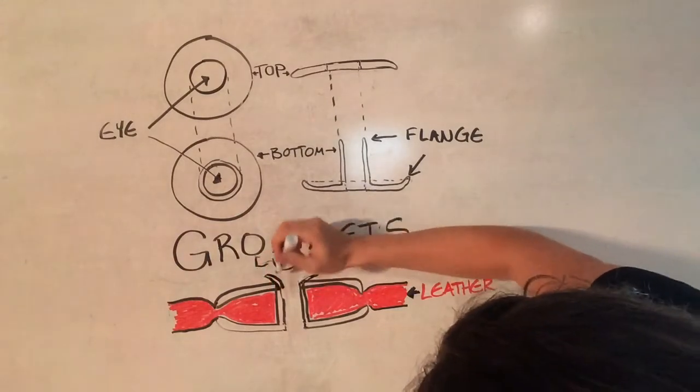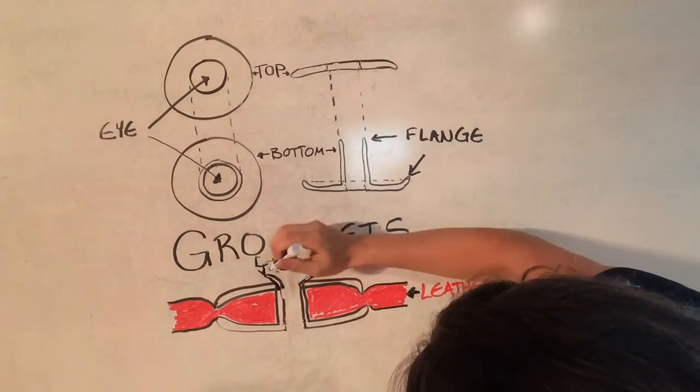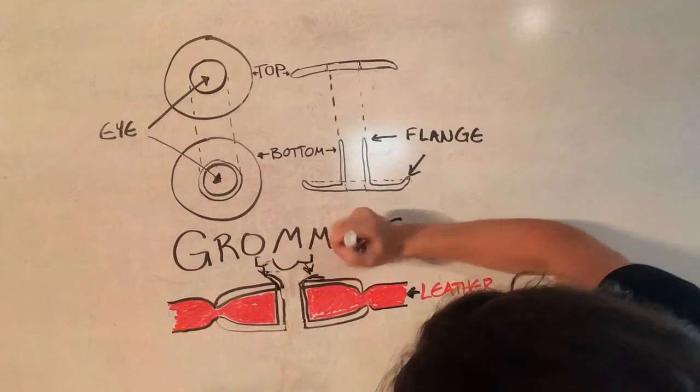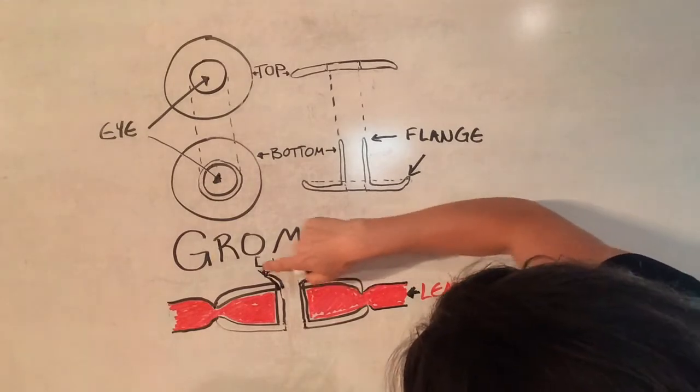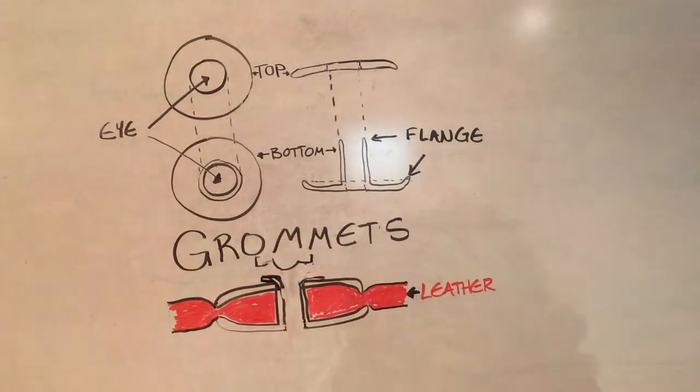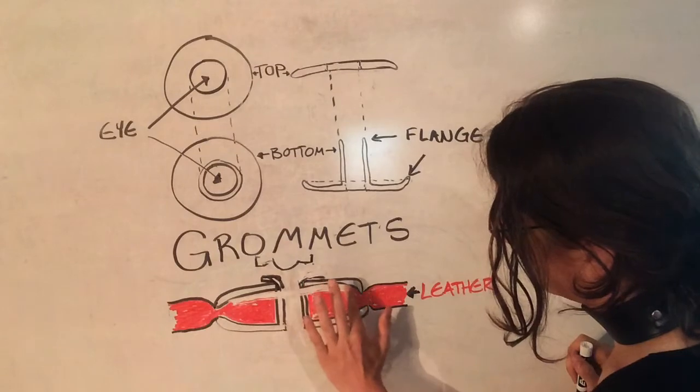So that as pressure gets pushed down from this direction, here and here, the flange gets pressed flush like so. And then any further hammering you do is actually going to compress all of the leather like this.